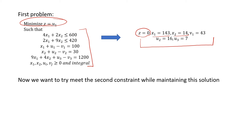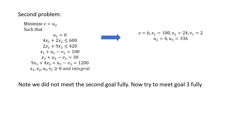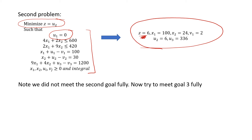Now we go on to the second goal. We know we can make u1 equal to zero, so we leave it at zero and see how well we can do with the second one. We add that as a constraint, forcing u1 to be zero, and solve for minimizing u2 — the shortage of the second product. We've met our first goal; now we ask: can we meet our second goal? When you solve that, you get Z equal to six. The best we can do on our second goal is a shortage of six — we can't fully meet it, but this is as good as we can do.